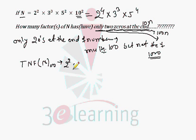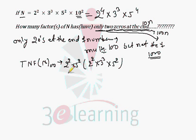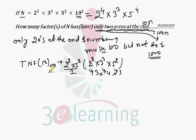Take out 100, which is 2 squared into 5 squared, from the number. We are left with 2 squared, 3 cubed, and 5 squared. The chances of occurrence: it's 1 for the compulsory part, 3 chances for the next, 4 chances, and 3 chances. So total chances ending with double zero are 36.